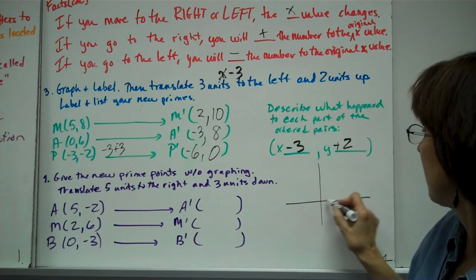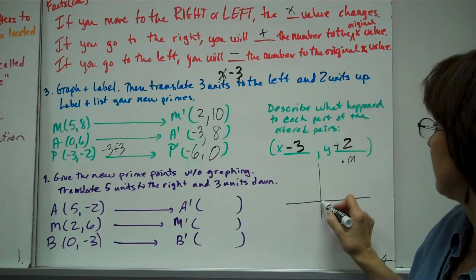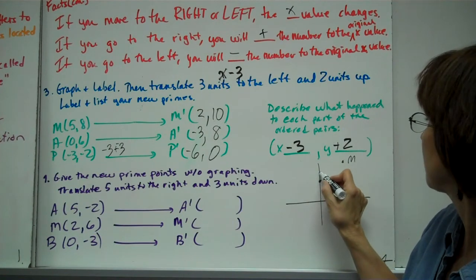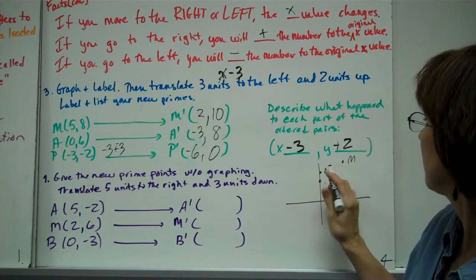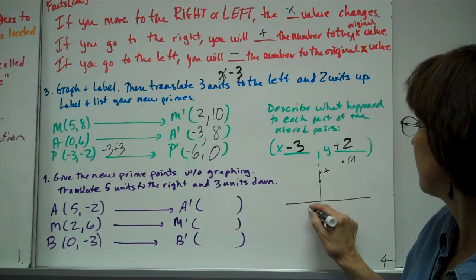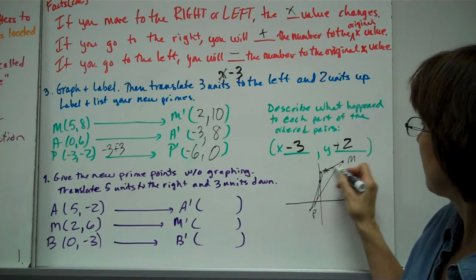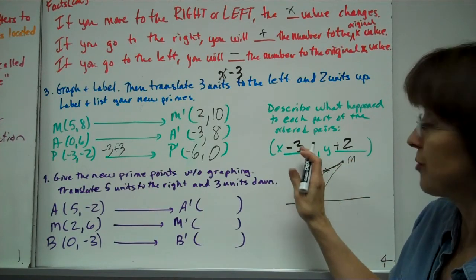If you were to sketch this and graph it, basically you'd have like (5,8) which would probably be way off here. A is (0,6), it's going to be somewhere around right here. And then your P is (-3,-2), which is way down here. So that's like a little triangle you have.